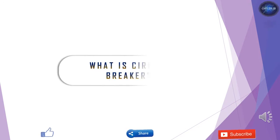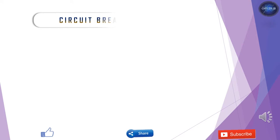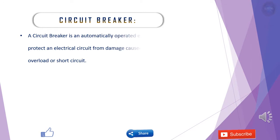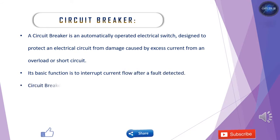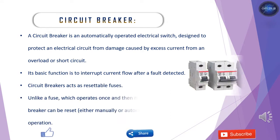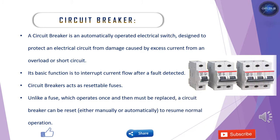To know more about low voltage circuit breakers, we should understand what a circuit breaker is. A circuit breaker is an automatically operated electrical switch designed to protect an electrical circuit from damages caused by an excess current from an overload or a short circuit. Moreover, a circuit breaker acts as a resettable fuse. The major basic function of a circuit breaker is to interrupt current flow after a fault is detected.